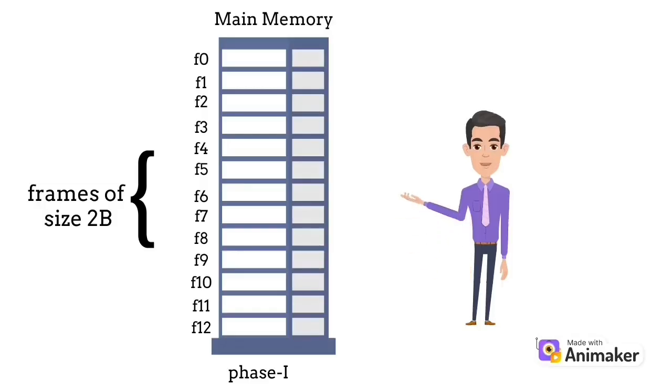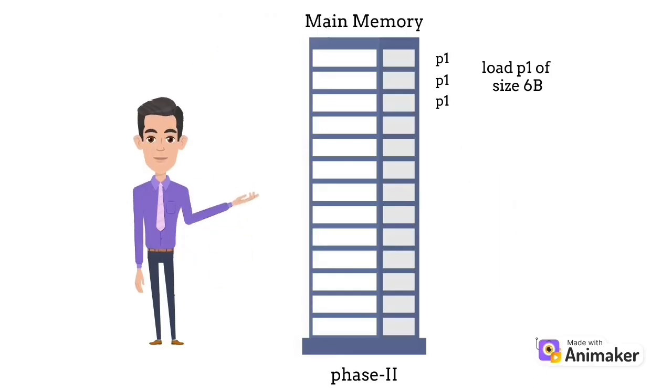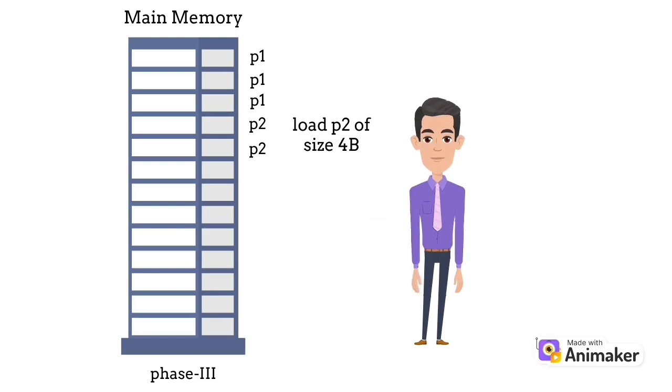Here you can see that in phase one, we take frames of size two bytes in main memory and page size of two bytes, so we can store processes efficiently. Coming into phase two, P1 of size six bytes occupies three frames in main memory as shown there. In phase three, P2 of size four bytes is stored in two frames in main memory.